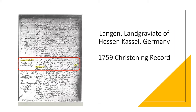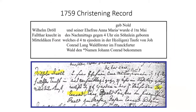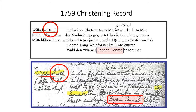This is the birth entry for Johann Conrad. In the birth entry, Wilhelm Drill, the father, is listed first. You'll notice that the last name is spelled D-R-O-umlaut-L-L, with a D instead of a T and with the umlauted O instead of an I. Phonetically, it's the same as drill and trill. The child's name, Johann Conrad, is given at the bottom of the entry.